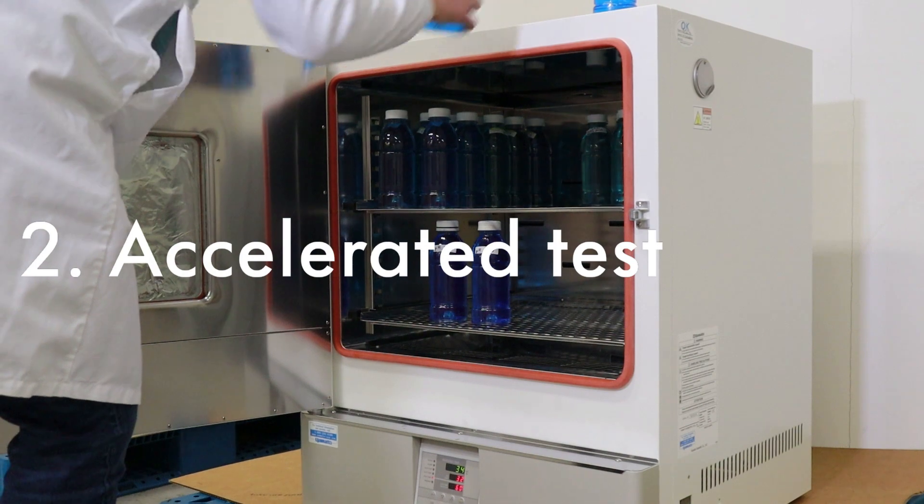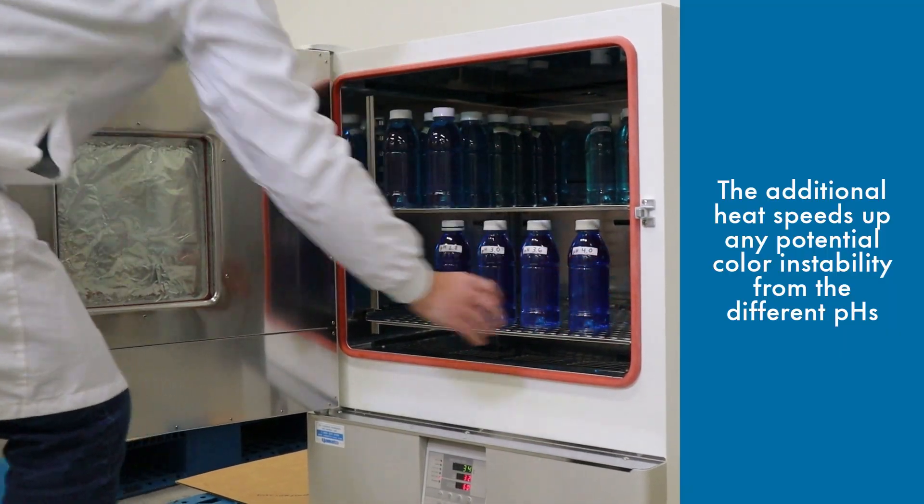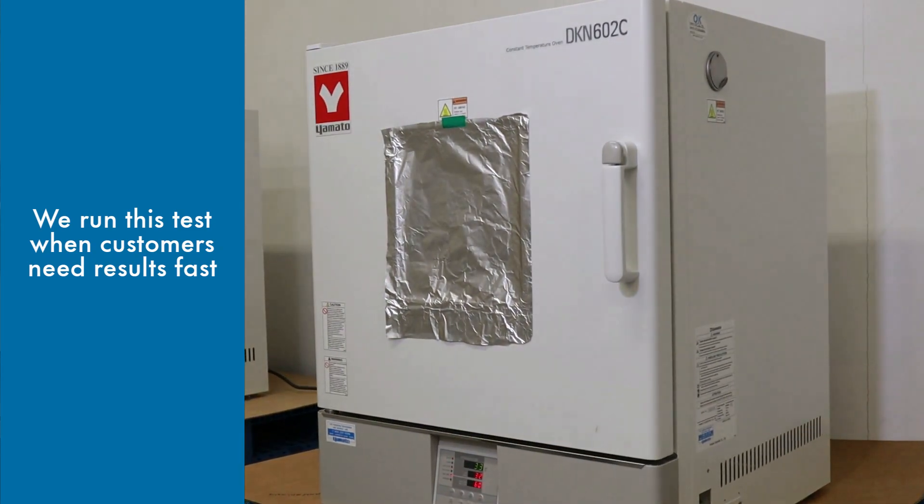In the accelerated test, the samples are stored at 32 degrees Celsius for up to 3 months. The samples are remeasured every 4 weeks to see if there has been any color change.